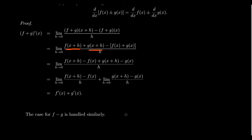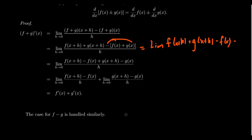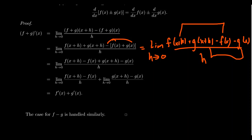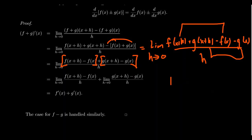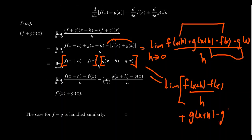So we have f of x plus h plus g of x plus h minus f of x minus g of x, all over h as h goes to zero. Regrouping, we put the f terms together and the g terms together: f of x plus h minus f of x, plus g of x plus h minus g of x, in the numerator. We then break this fraction into two separate fractions, each over h.